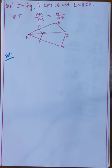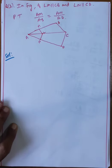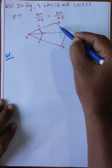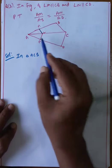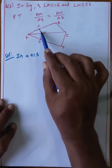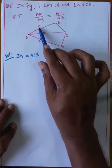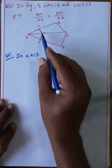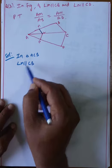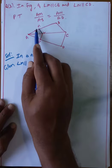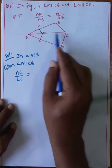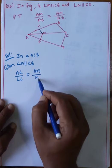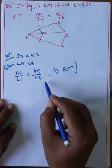Next problem: In the figure, LM is parallel to CB in triangle ACB. Whenever a line is parallel to one side, it divides the remaining two sides in the same ratio. By BPT, AL by LC equals AM by MB. This is equation number one.